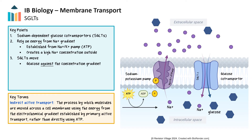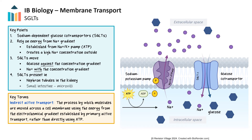Even though SGLTs themselves do not use ATP directly, as sodium ions flow back into the cell down their concentration gradient, glucose is co-transported into the cell with sodium. This process is essential in cells lining the small intestine and in the nephron tubules of the kidneys, where efficient glucose absorption and reabsorption are vital. In the small intestine, these co-transporters enable cells to take up glucose from the digestive tract via the membranes of the microvilli, providing the body with a primary energy source. In the nephron, SGLTs facilitate glucose reabsorption from the filtrate, ensuring that valuable glucose does not exit the body in urine but is instead reclaimed for energy use.